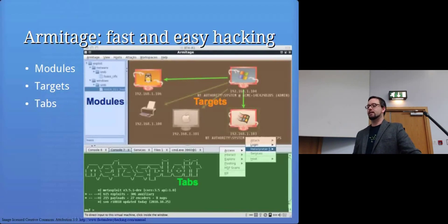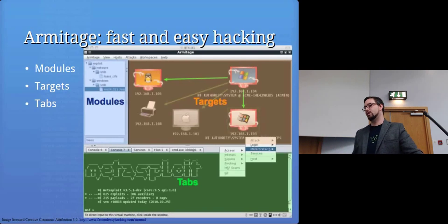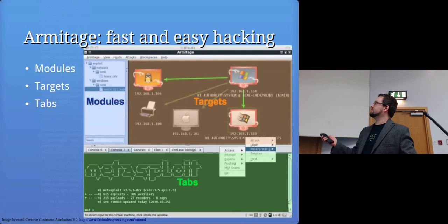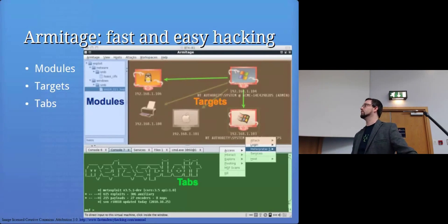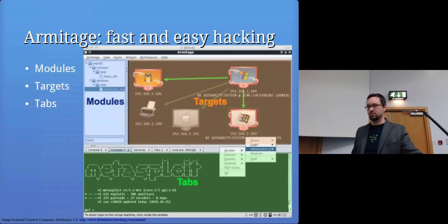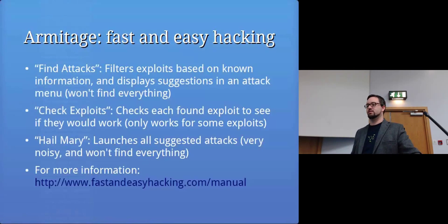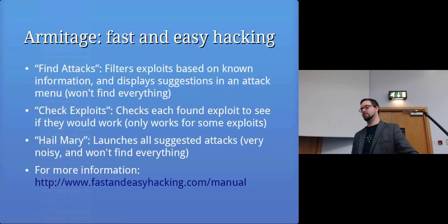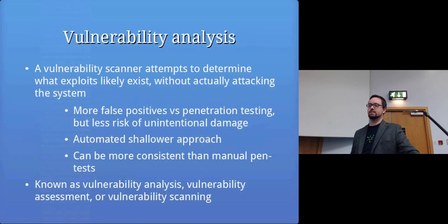This is what Armitage looks like — you've got a list of modules on the top left-hand side and you've got targets. Each time it detects a computer it shows an icon representing it and what operating system is detected. One of the best features is at the bottom it shows you the actual Metasploit commands it's using to do the attack. You can do things like find attacks, check exploits, and run the Hail Mary to try everything.